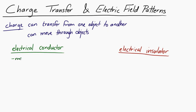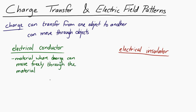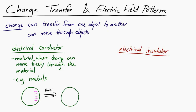Electrical conductors are materials where charge can freely move through the material. Metals are pretty good examples of electrical conductors. If we have an electrical conductor that has some negative charge on one side of it, that charge can move freely through the conductor, redistributing itself so that the negative charges are distributed evenly across the outside — because negative charges repel each other, the charge rushes away so all negative charges are as far as possible from each other.